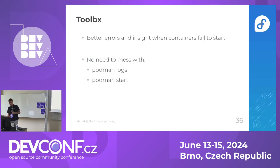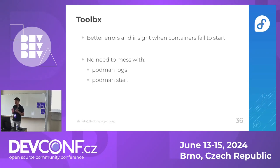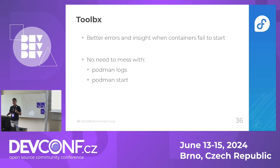We now have better error messages when containers fail to start, which happens often enough based on bug reports. Normally you'd have to fiddle with Podman logs or podman start, but now you just get the error right there — it saves at least one round trip on the bug tracker where you'd have to tell the person to run a special command.